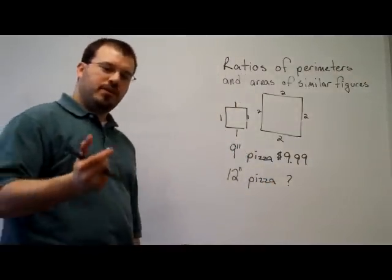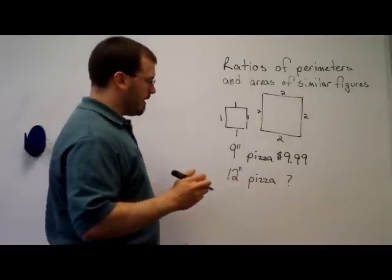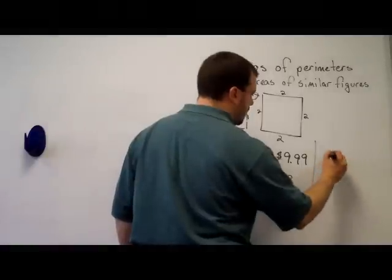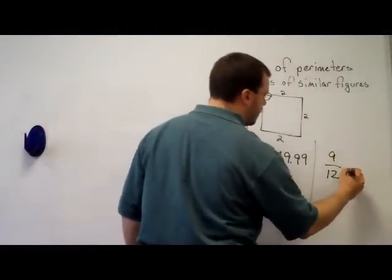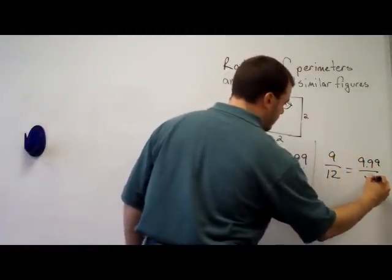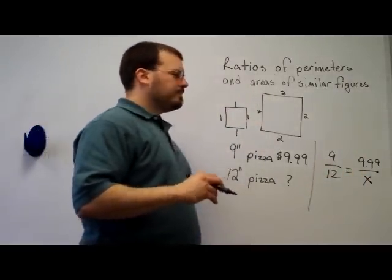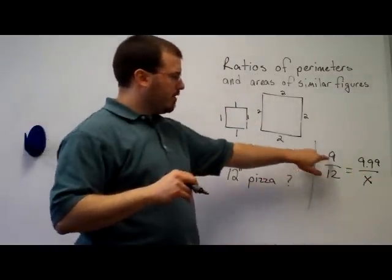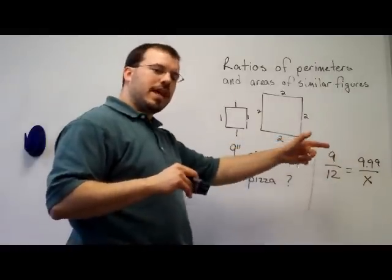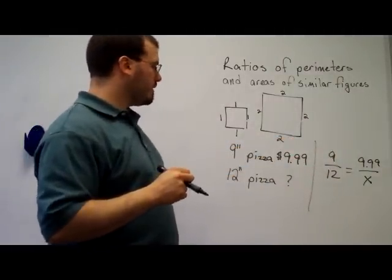When you're thinking about pizza, you're probably thinking the area, the amount of pizza that you have to eat. So, a common mistake on this is to just say, well, 9 over 12 equals $9.99 over x, the cost of the 12 inch pizza. Well, that's the ratio of the corresponding parts. The diameters for a circle would be kind of like the sides of a square. They're corresponding parts.